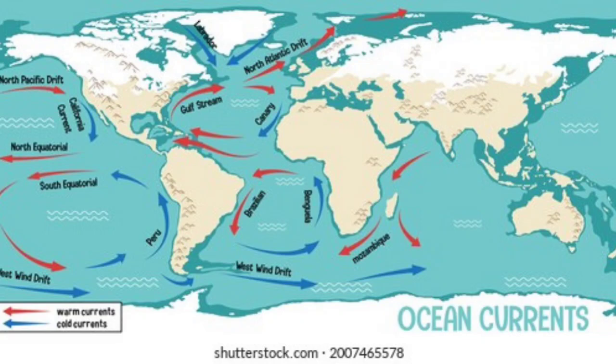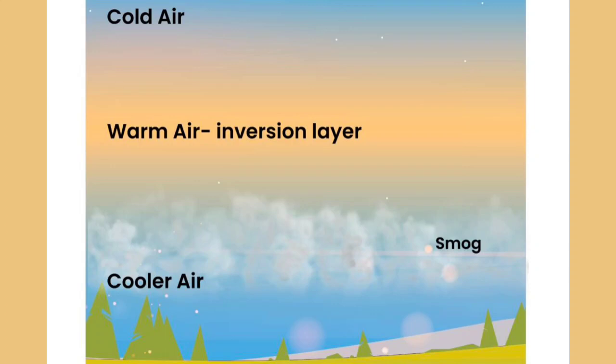Temperature distribution on the map is shown with the help of isotherms. Isotherms are lines on the map joining places having equal temperature.